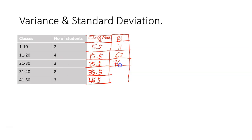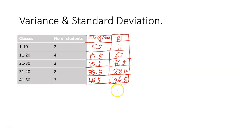For the third class, 3 times 25.5 you get 76.5. For the next class, 8 times 35.5 you get 284. When you find the sum of fx, you get 570.